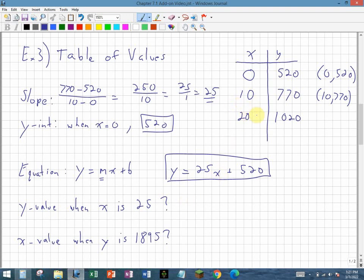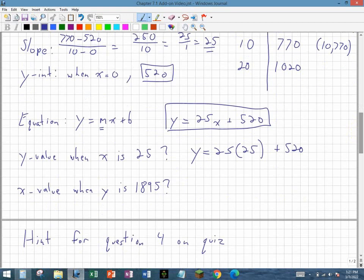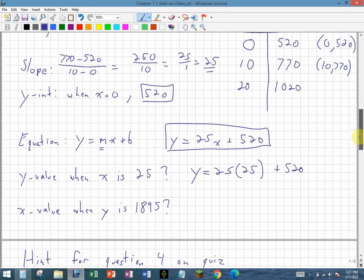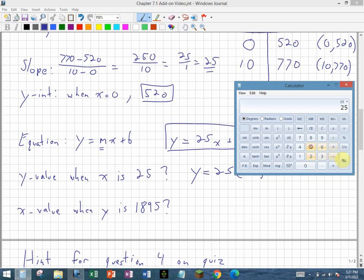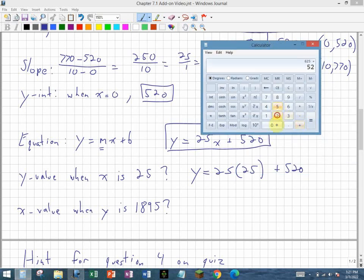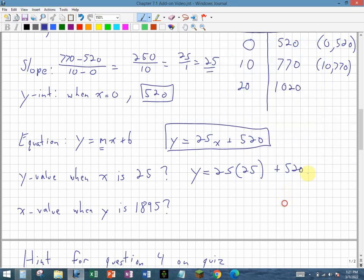Because 25 doesn't exist on my table of values, I'm going to have to take 25 and plug it into x. So I replace x with 25, plus 520. And again, this is stuff you can do on your calculator as well. So 25 times 25, 625, and then plus 520 is 1145. So that's my y value when x is 25.